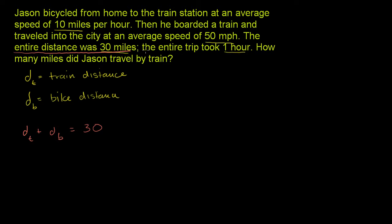The next piece of information is that the entire trip took one hour. So the time by train plus the time by bike took one hour. You might wonder whether that introduces two new variables, but let's think about whether we can express the time by train and the time by bike in terms of our two distance variables.